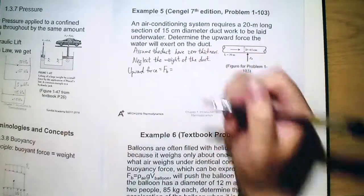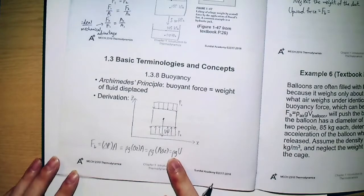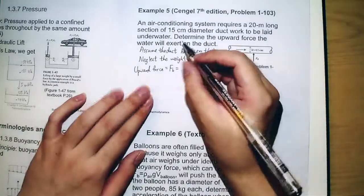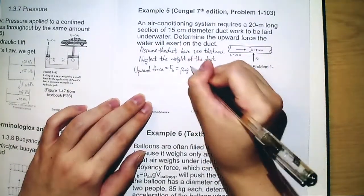Okay, so the buoyant force is given by ρ, where ρ should be the density of the fluid that surrounds that object. So here the density should be of water times g times V.